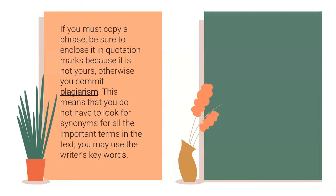If you must copy a phrase, be sure to enclose it in quotation marks because it is not yours. Otherwise, you commit plagiarism. This means that you do not have to look for synonyms for all the important terms in the text — you may use the writer's keywords. You have to do a proper citation when you use the words of other authors or writers. If you want to copy the original structure, just put a quotation mark, the author, and the year it was published. It's not necessary to change every word; you can still maintain the key terms used by the author.